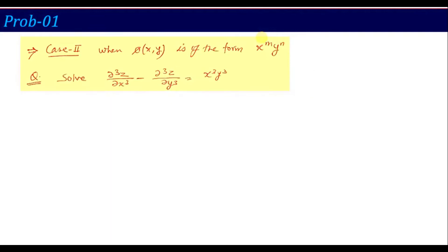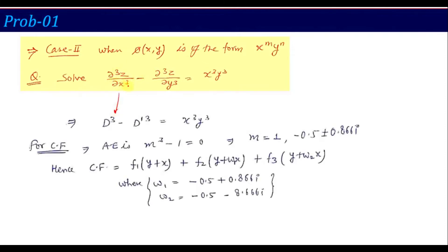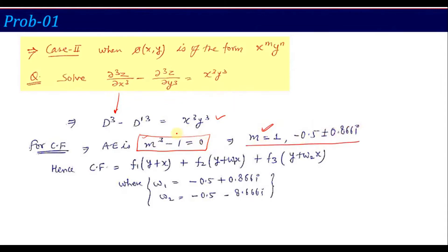Once we recognize this is a homogeneous linear equation, we first calculate the CF. We convert the equation to capital D notation: D³ minus D'³ equals x³y³. For CF, the right hand side becomes zero. We substitute M in place of D and 1 in place of D', giving the auxiliary equation M³ minus 1 equals 0. Using a calculator, the roots are M equals 1, and minus 0.5 plus or minus 0.866i — three roots for this cubic equation.